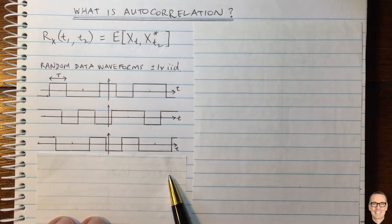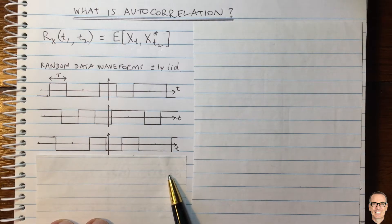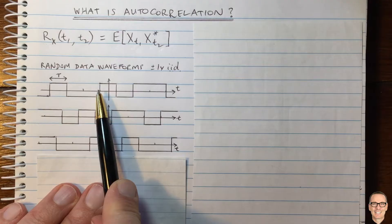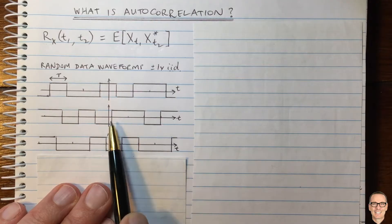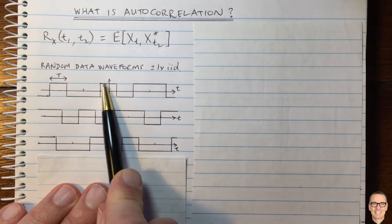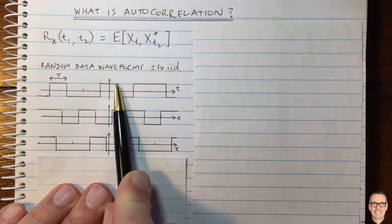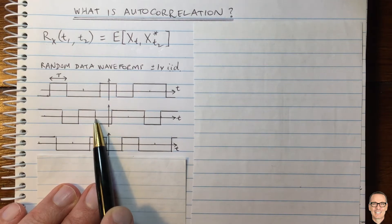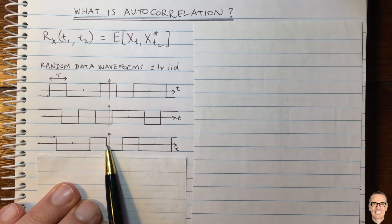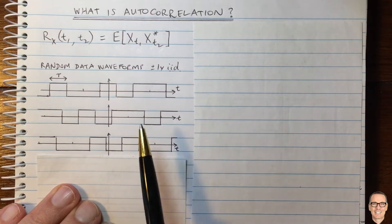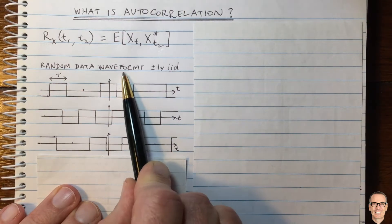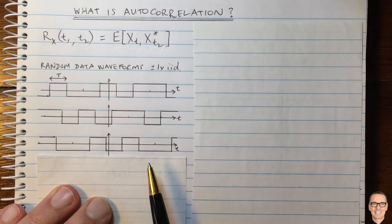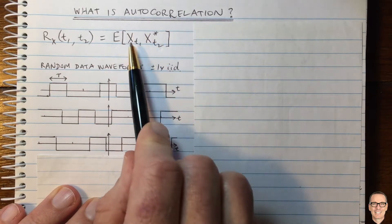Let's look at other different possible waveforms. Here's one and here's another. There's an additional aspect: the timing is also random. You can see this one starts its clock at a certain time, but this one is offset and so is this one. So we're considering digital waveforms with random time offsets. Now let's come back and think about autocorrelation.